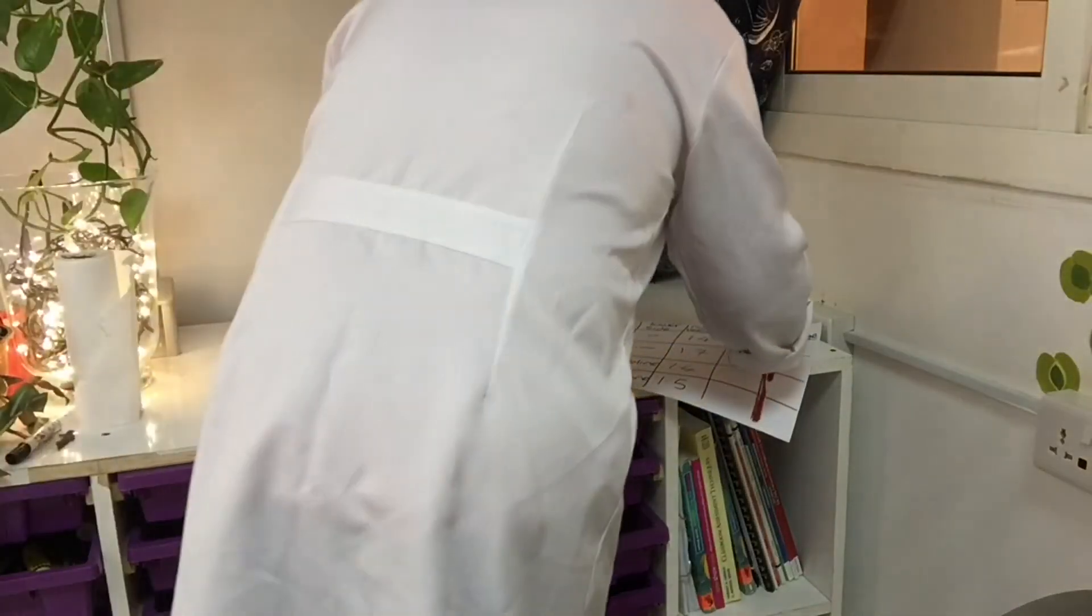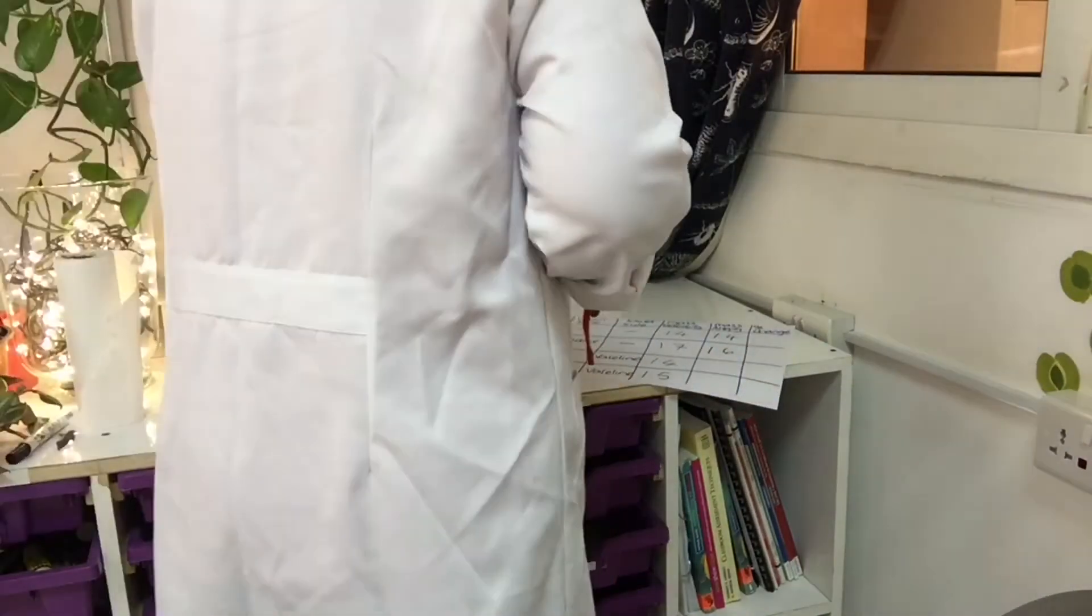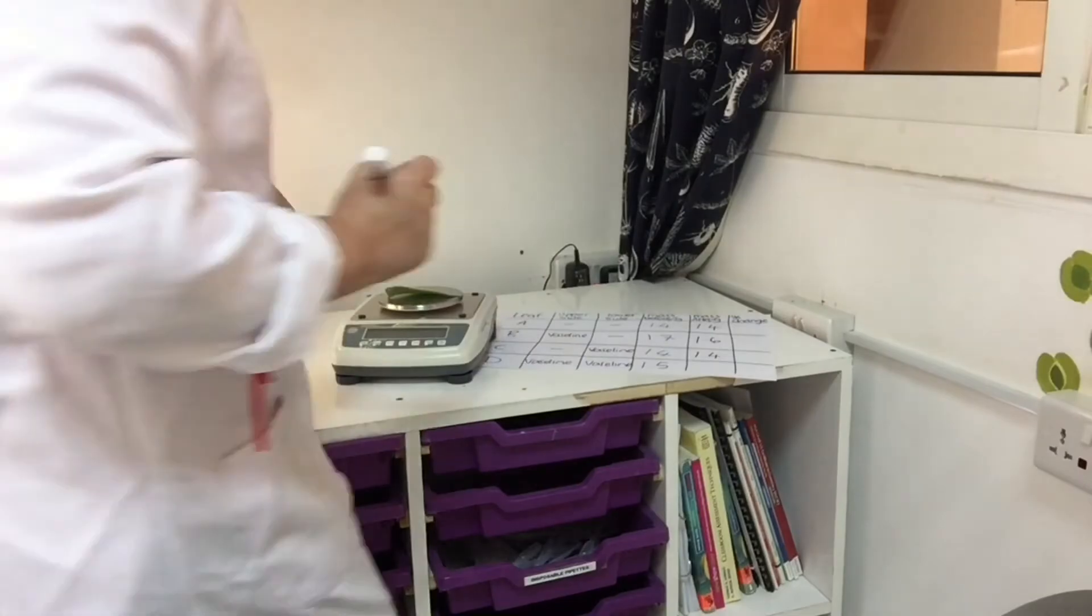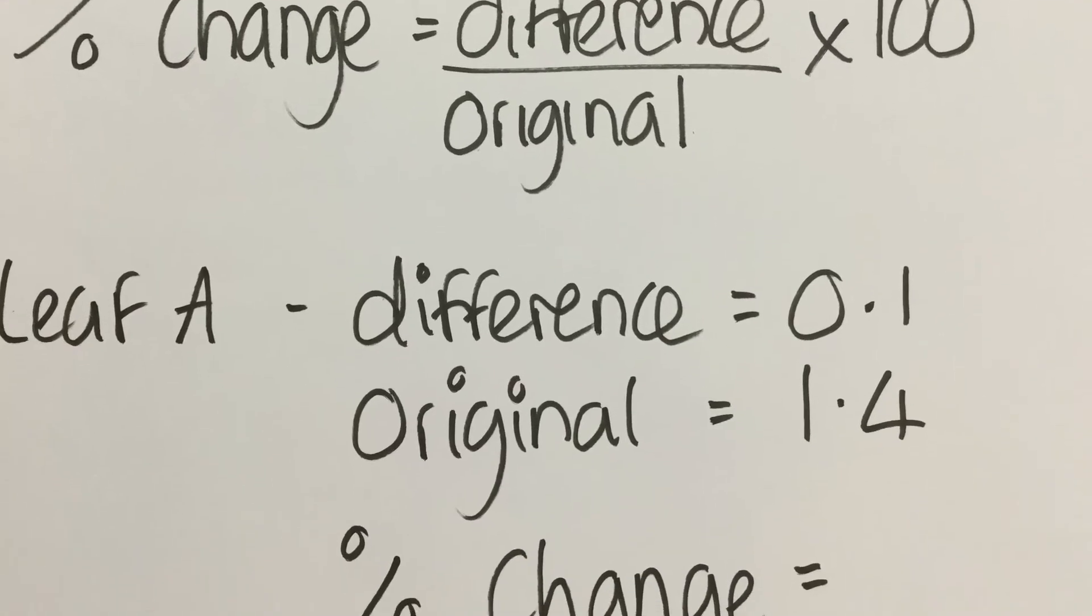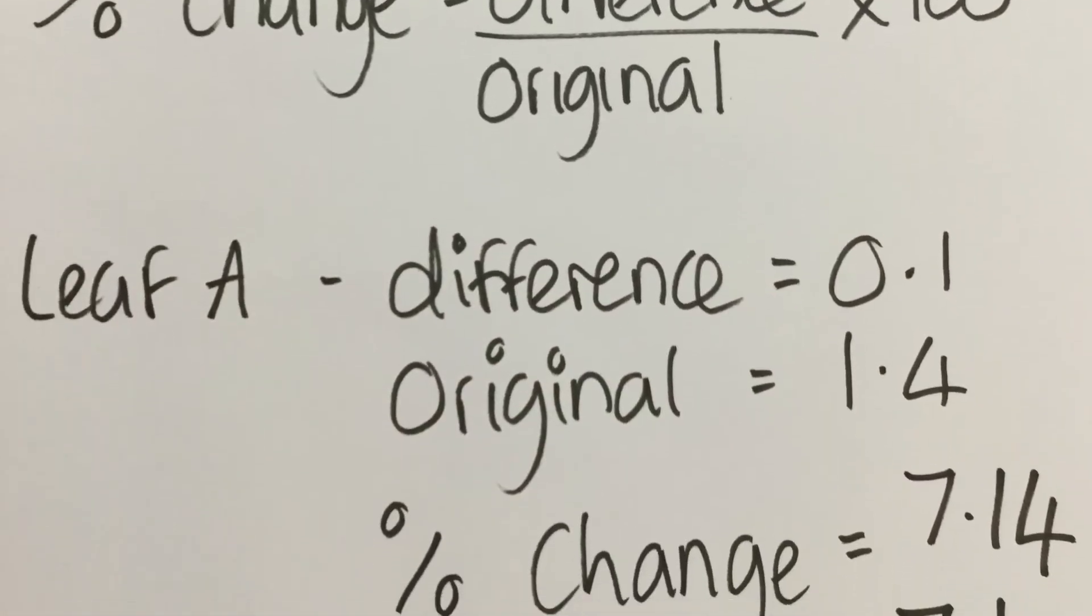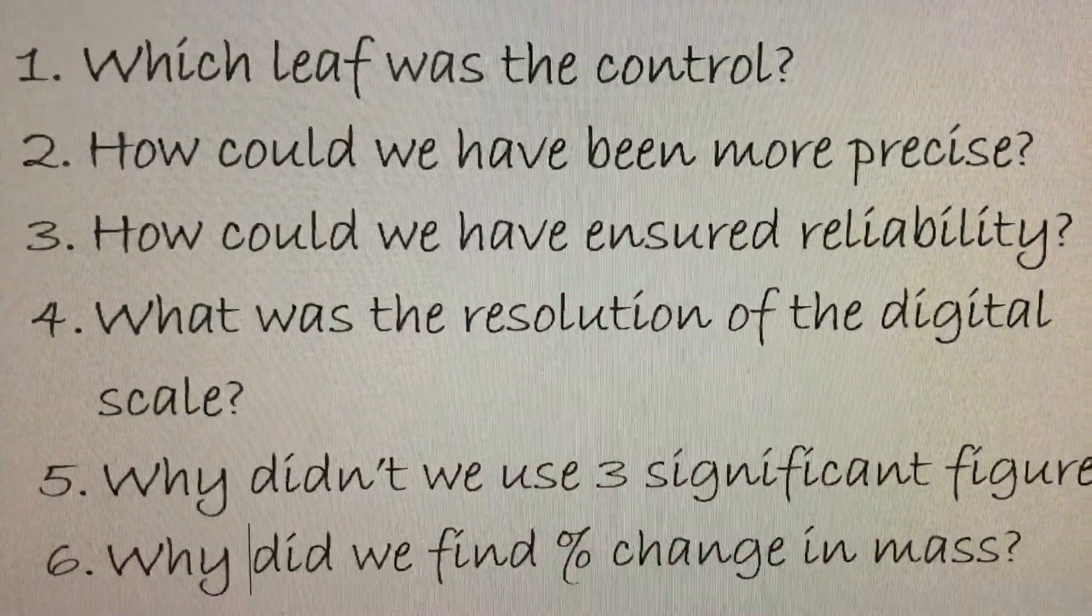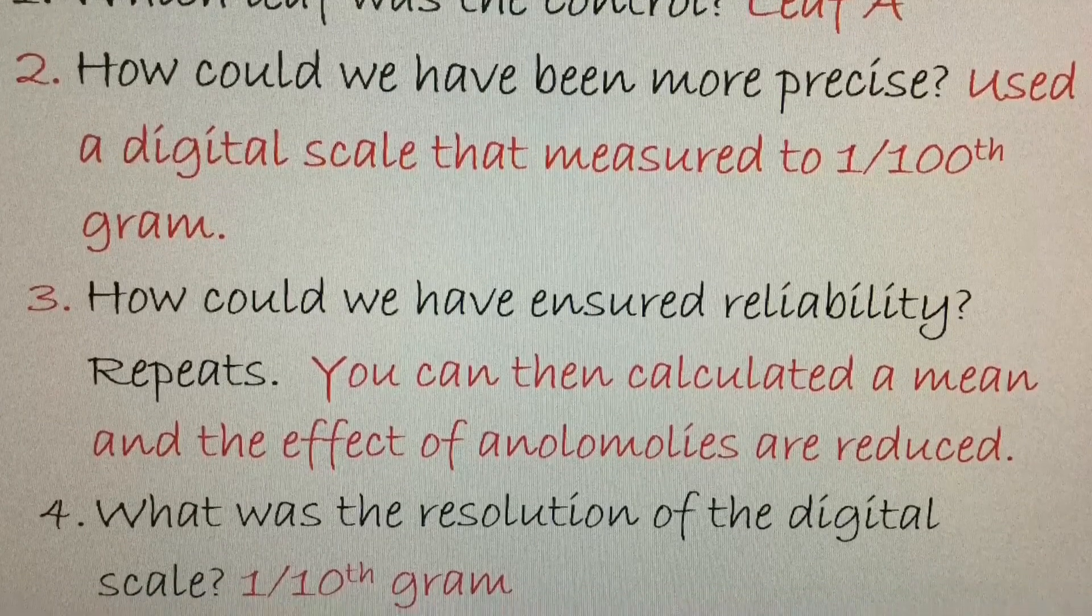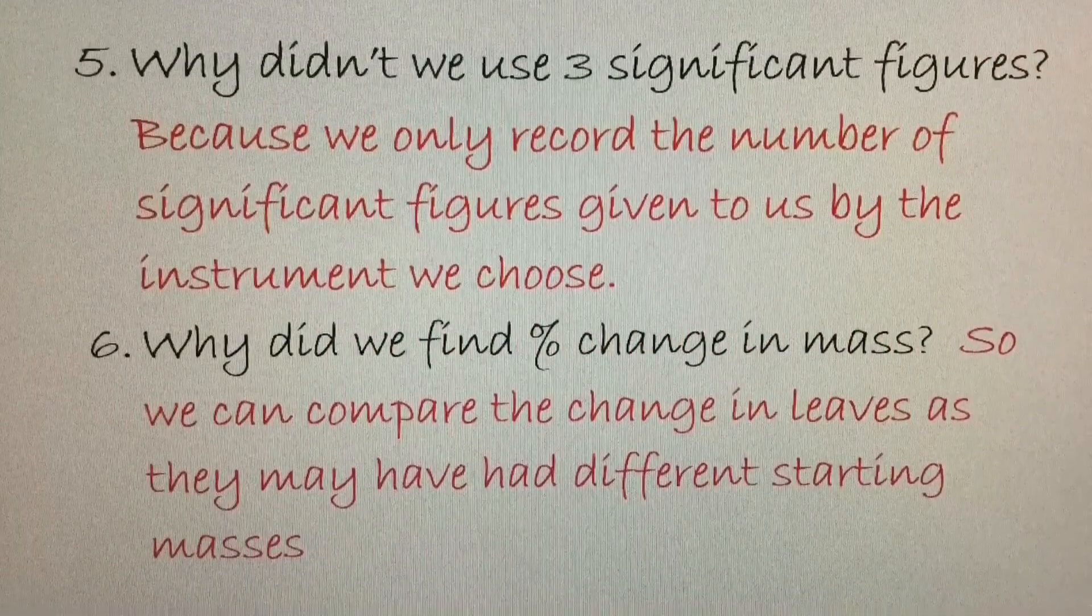I've laid them out carefully so I know which is leaf A. I'm now going to record the mass straight into my table. Then I need to look at the difference for each leaf—whoops, should have included that in my table before I started. Then I'm going to work out the percentage difference and compare them. Can you answer these questions?